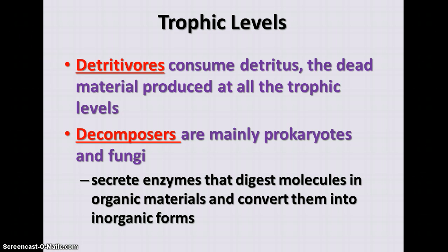Detritivores consume detritus — the dead material produced at all the trophic levels, including things that die and leftover parts not consumed at a given level. They are very important because they return nutrients back to the ecosystem. Decomposers are mainly prokaryotes and fungi that break down molecules into the organic materials they were originally composed of and convert them into inorganic forms, recycling nutrients such as oxygen, carbon, nitrogen, and phosphorus back through the ecosystem so they can be used again.